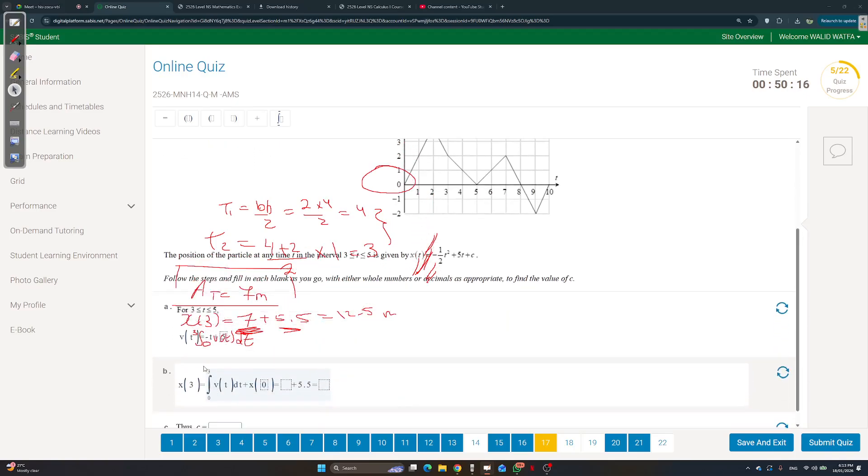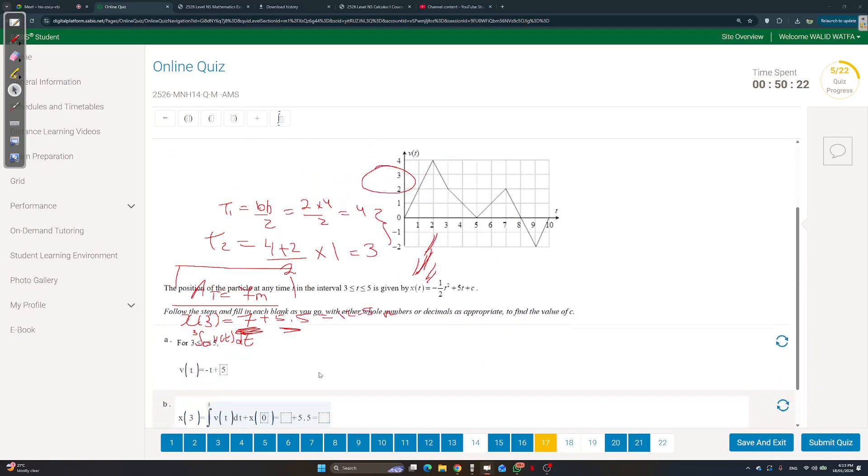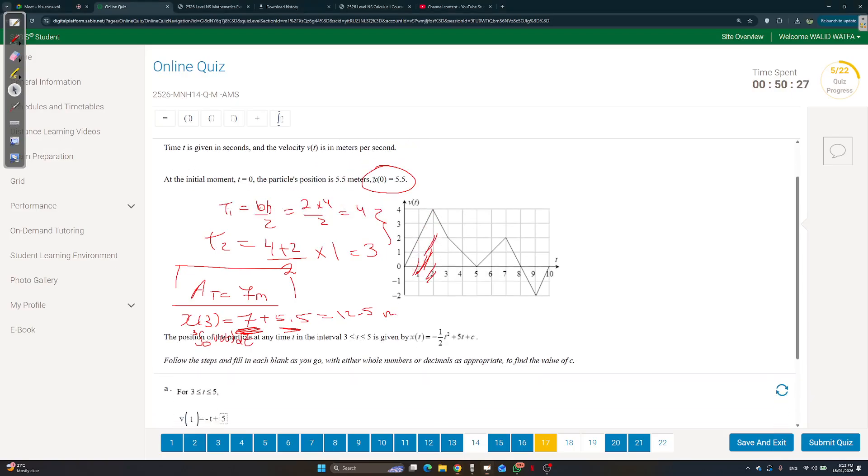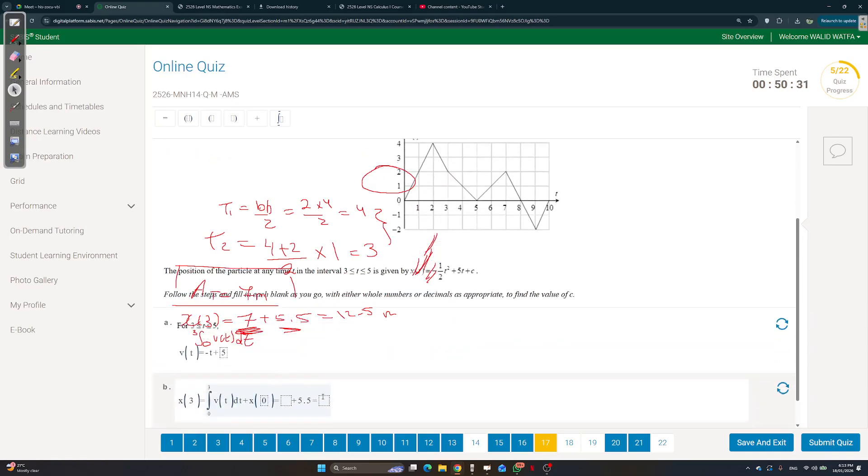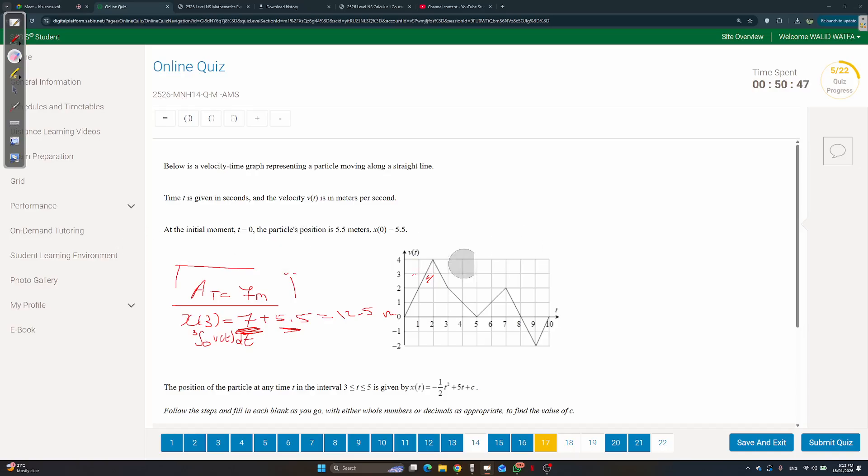That's why they said integral from 0 to 3. And they're telling you the area of the graph from 0 to 3, plus 5.5. Someone's going to ask, why did you choose x of 0? That 5.5 is x of 0, so we put x of 0 equals something plus 5.5. We know that x of 0 is the 5.5, and this V(t) integral is the area, which we found as 7. And 7 plus 5.5 is 12.5. Nice, so we now found the initial position.